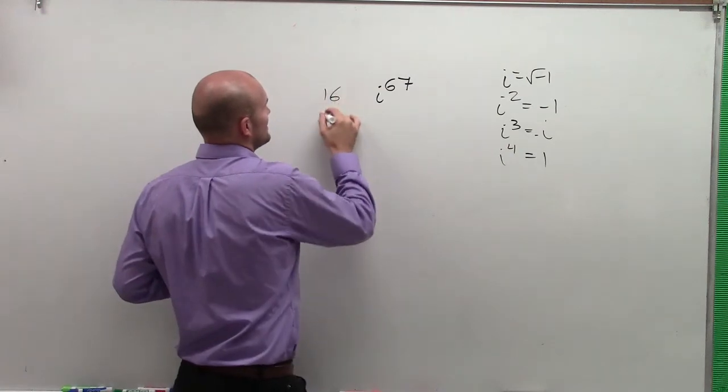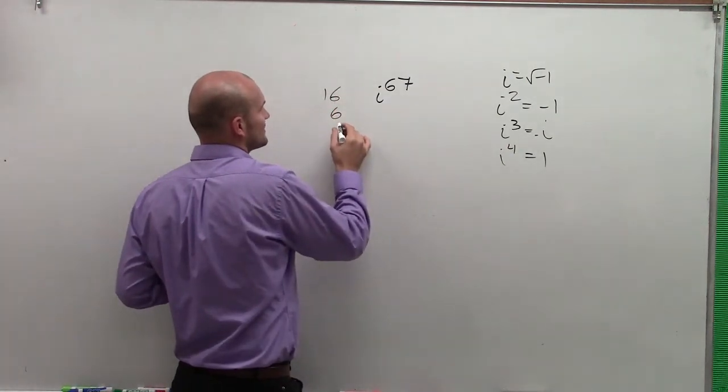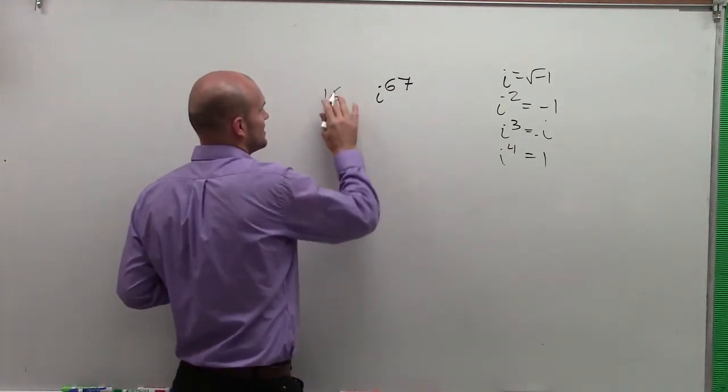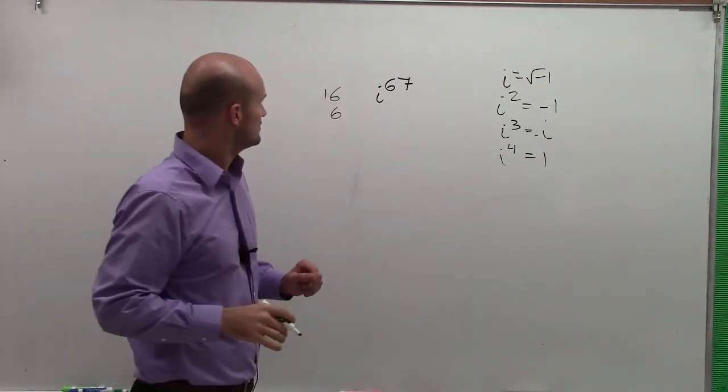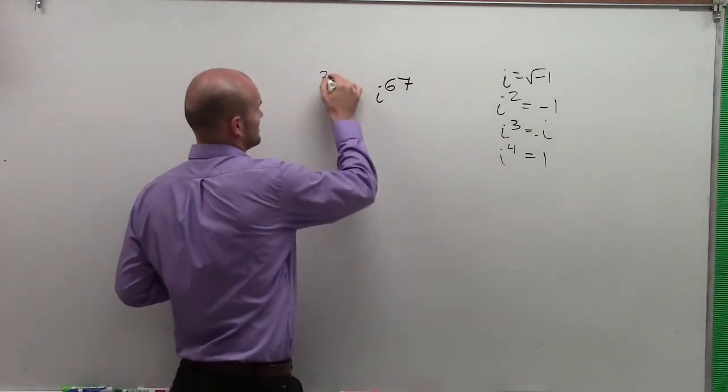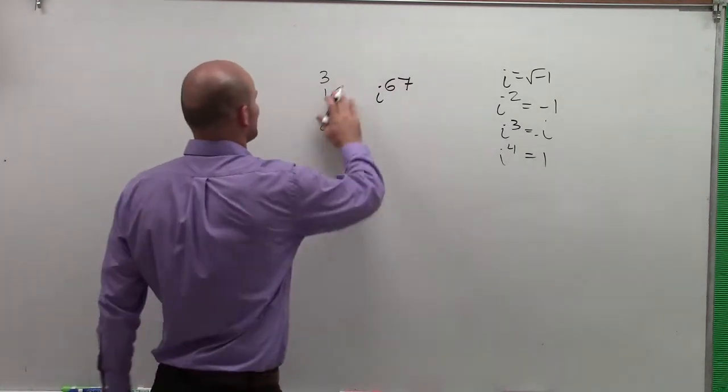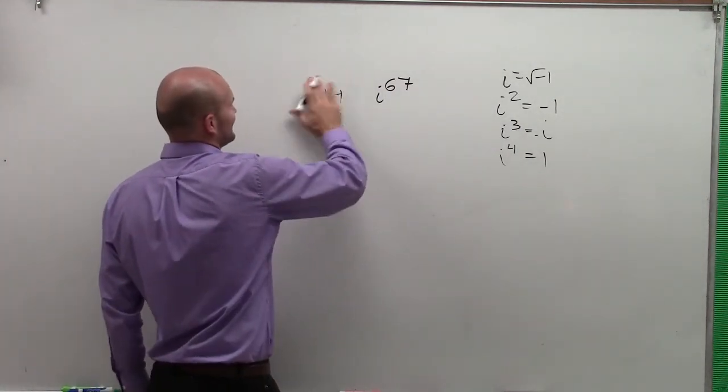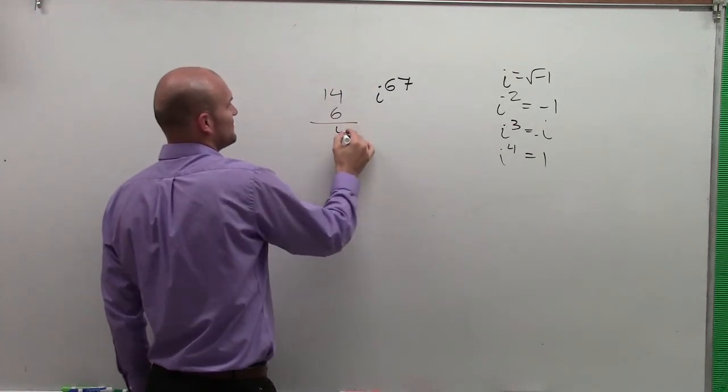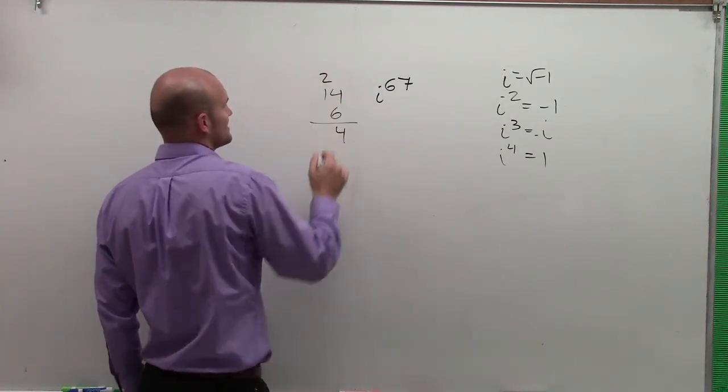So if I did 6 times 16, what I get is 6 times 6, 96. Wait, that's 16, no 14. That doesn't make sense. 6 times 14 is going to be 4, 20, 6, 7.